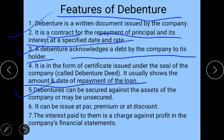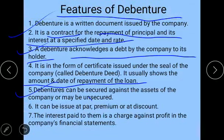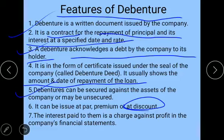A debenture is in the form of a certificate issued under the seal of the company, called a debenture deed. It usually shows the amount and date of repayment of the loan. Debentures can be secured against the assets of the company — either fixed or floating assets — or they may be unsecured; it is not mandatory to secure them against an asset. Debentures can also be issued at par value, at a premium, or at a discount. For example, if the nominal value is 100 rupees and you issue it at 100, that is par; at 110, that is a premium of 10 rupees; and at 90, that is at a discount.